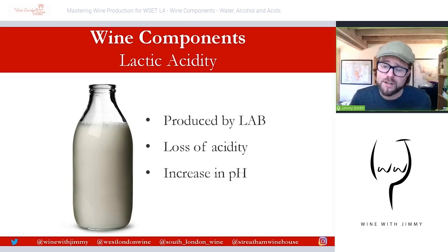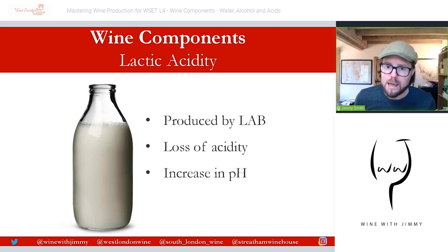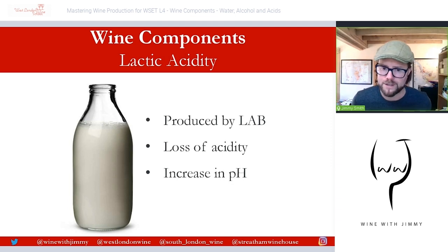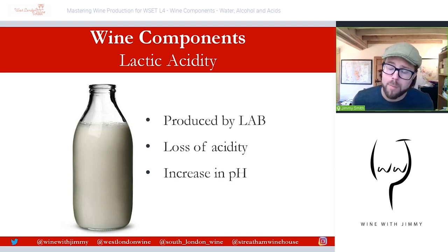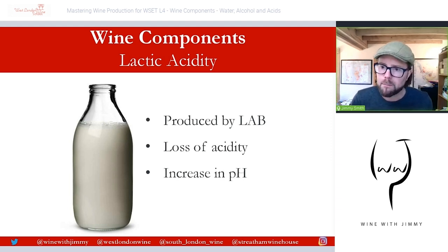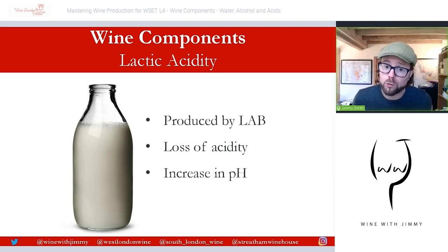Lactic acid is another acidity produced during the winemaking stage. During malolactic conversion, lactic acid bacteria (LAB) may convert malic acid to lactic acid, which gives a softer tasting, less powerful acidity. In some instances acetic acid can also be produced alongside lactic acid — this is called lactic souring, giving a sour milk smell and deemed a problem and a fault. There is also a pH shift and loss of acidity.